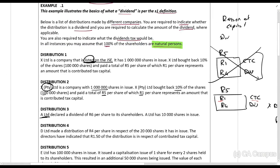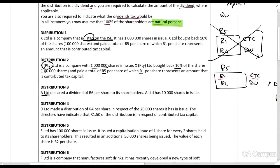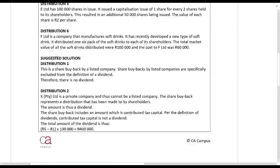Distribution 3: A Ltd declared a dividend of 6R per share to its shareholders. It has 10,000 shares in issue. That full amount will be subject to dividends tax.